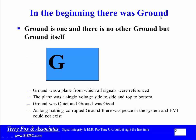In the beginning there was ground, and ground is one, and there is no other ground but ground itself. Ground was a plane from which all signals were referenced. The plane was a single voltage, side to side and top to bottom. Ground was quiet, and ground was good. As long as nothing corrupted ground, there was peace in the system, and EMI could not exist.